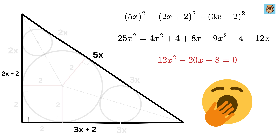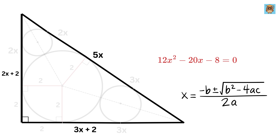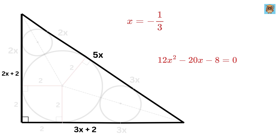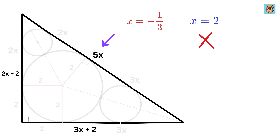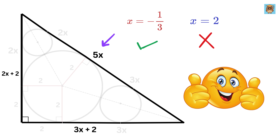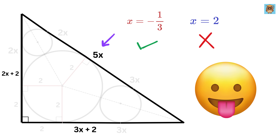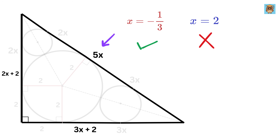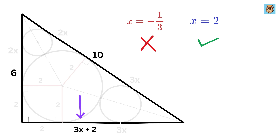Using the quadratic formula, we get x = −1/3 and x = 2. Obviously x = 2 is the only valid solution since side lengths must be positive. Thus the hypotenuse is 5x = 10 units, the vertical side is 2x + 2 = 6 units, and the horizontal side is 3x + 2 = 8 units. This is the well-known 6-8-10 Pythagorean triple. Also, the length of one piece is 2x = 4 units, and the other piece is 3x = 6 units.